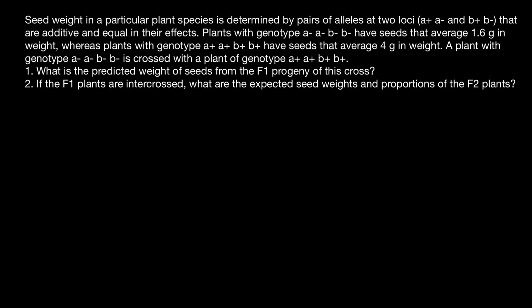Here's the problem. Seed weight in a particular plant species is determined by pairs of alleles at two loci. The alleles A+, A−, B+, and B− are additive and equal in their effects. Plants with one genotype have seeds that average 1.6 grams in weight, whereas plants with another genotype have seeds that average 4 grams in weight.